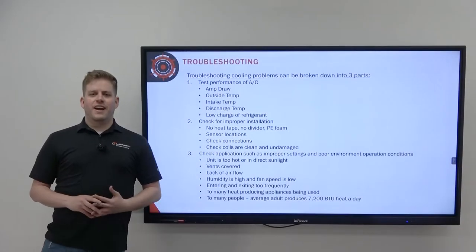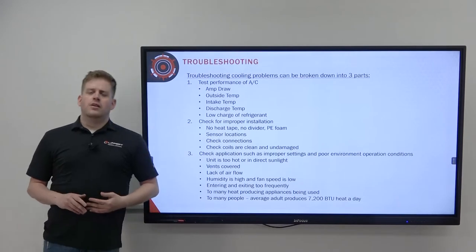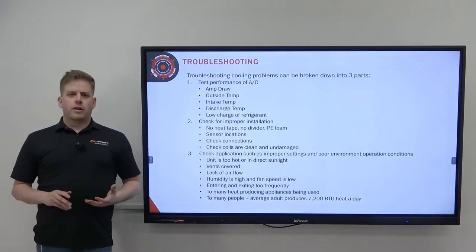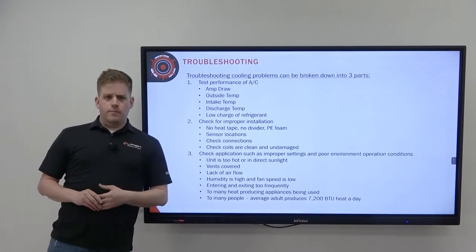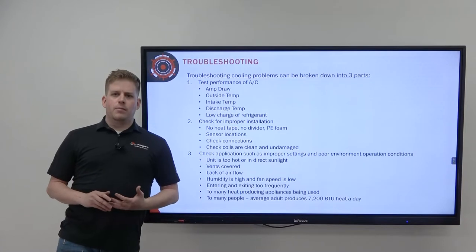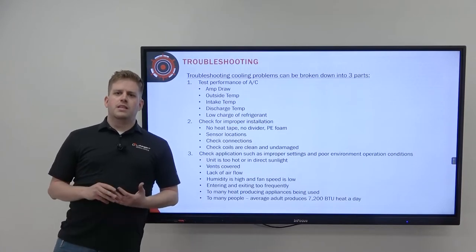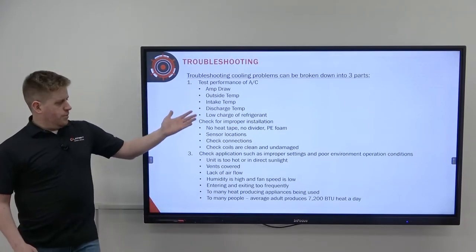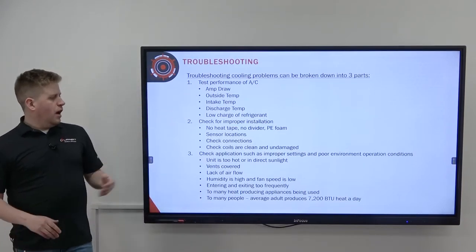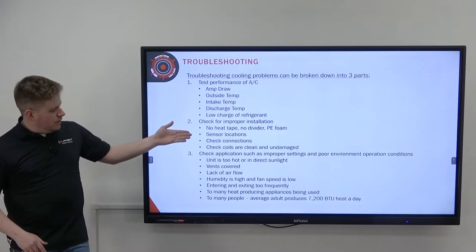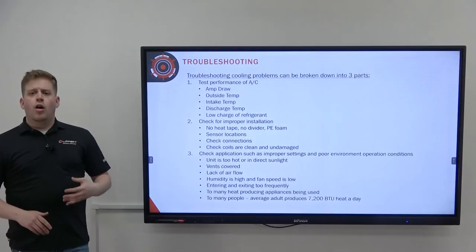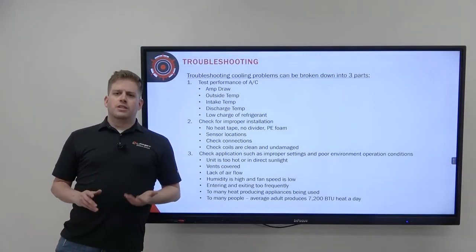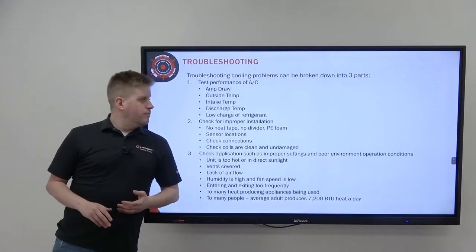Now that we understand error codes, let's talk about additional troubleshooting. For an air conditioner not cooling, that can be broken up into three separate categories: an air conditioner problem, a problem with installation, or an application issue.